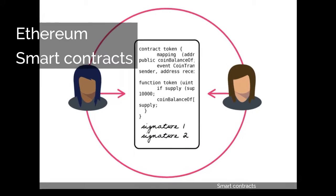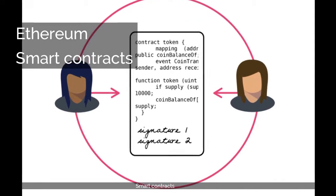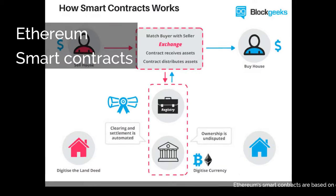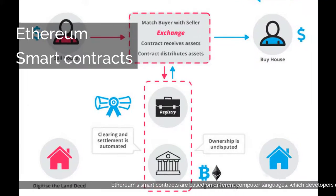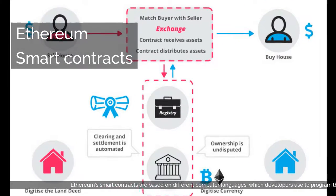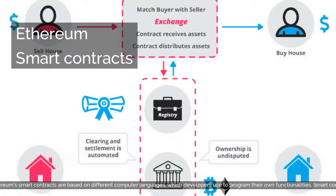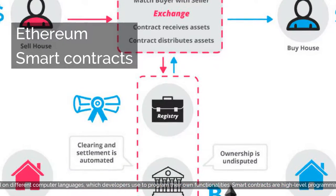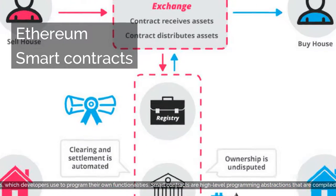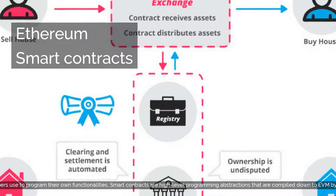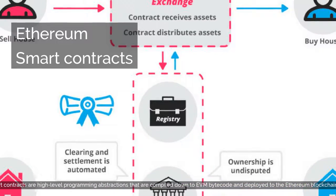Ethereum Smart Contracts are based on different computer languages, which developers use to program their own functionalities. Smart Contracts are high-level programming abstractions that are compiled down to EVM bytecode and deployed to the Ethereum blockchain for execution.